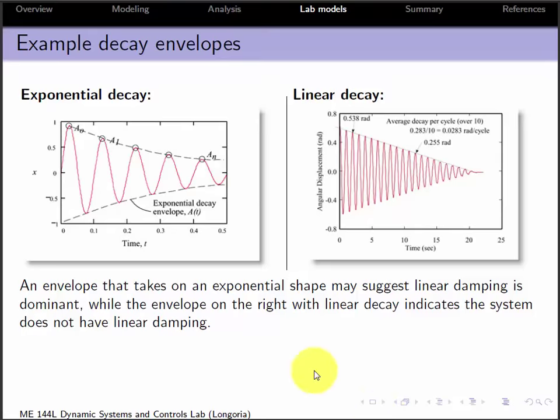So here's what some example decays would look like. The one on the right here should look familiar. Actually, this is pendulum data. You recall that pendulum had damping that was not linear, and it had linear decay. So the nonlinear friction gave us a linear decay. That was kind of a unique aspect of that. But when the system has linear damping, you actually get an exponential decay. That's what that model says.